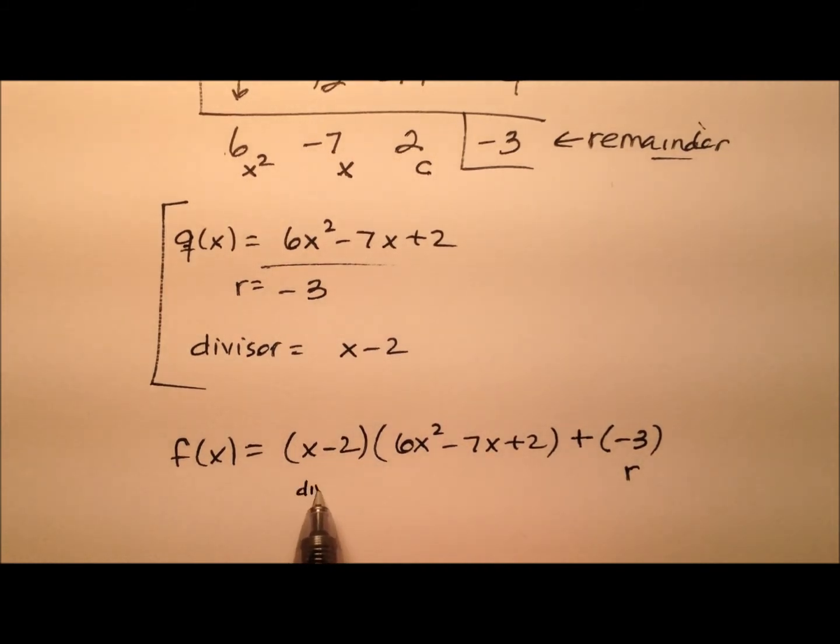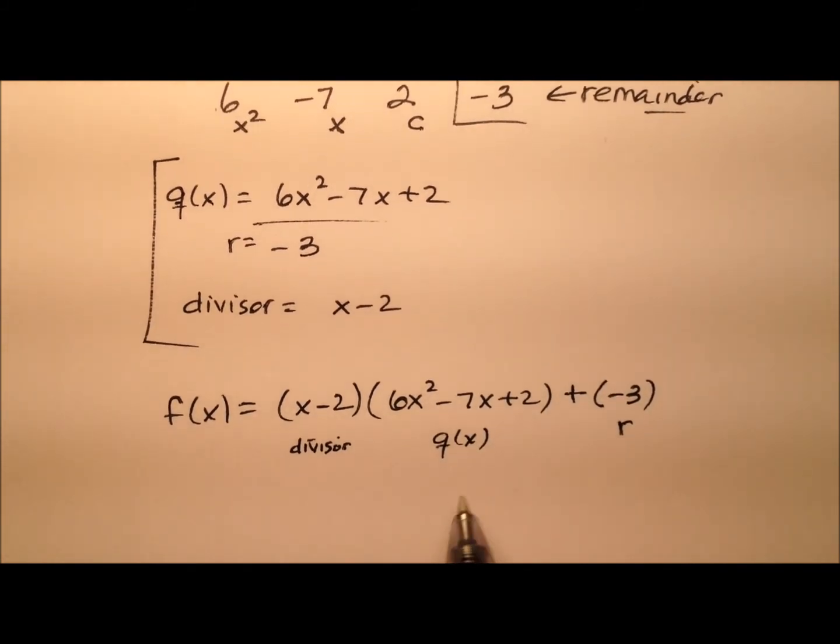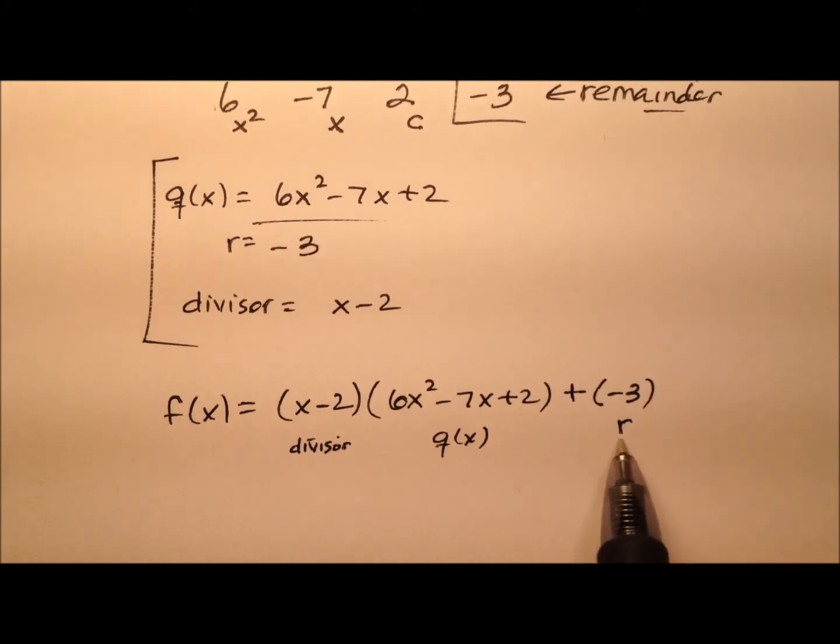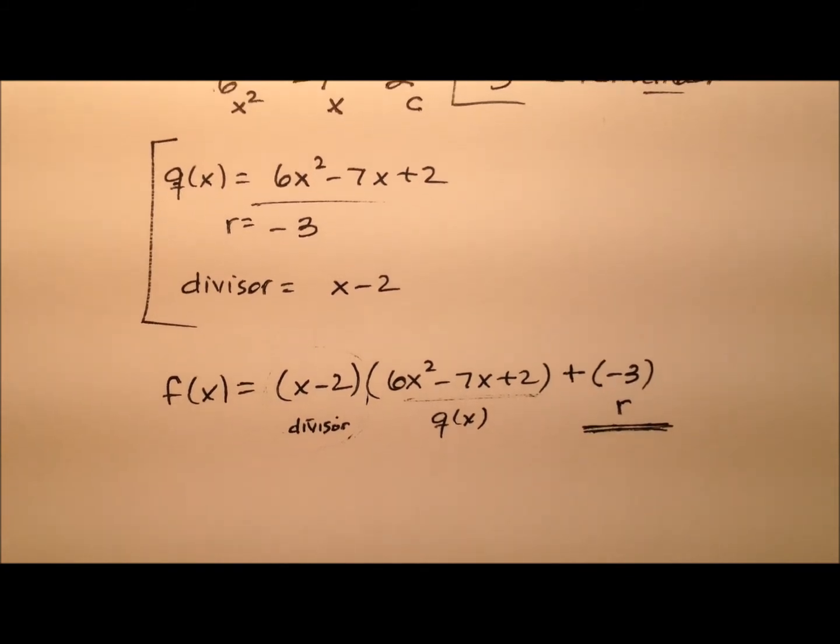So here's my divisor and then here's this q(x). Okay, so why do we write it in that form? Well, a couple of reasons. One, so we can see what the remainder is, and so we can kind of differentiate between the quotient and see if this divisor, what this relationship is when I divide this polynomial.